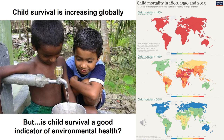One metric that well represents environmental health is childhood survival or childhood mortality. From these maps, the infant or child mortality rate has drastically decreased across the globe in the last 625 or so years, especially in North America, Europe, and Russia. It's dropped all over the world due to improved healthcare. A key reason is increased access to clean water, air, good food, and medicines.